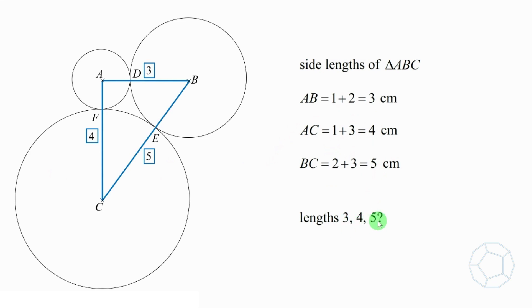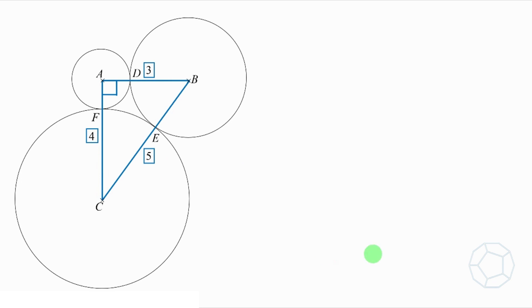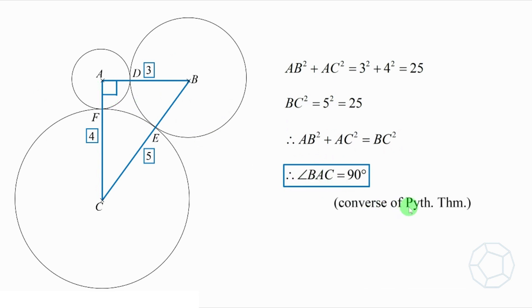Well, probably you might notice that it's the famous right-angled triangle. Let's prove it quickly. Because AB square plus AC square is equal to 25 and BC square is also equal to 25. Therefore, the sum of squares of the two shorter sides is equal to the square of the longest one. Therefore, angle BAC is equal to 90 degrees and the reason is Converse of Pythagoras theorem. This result is a turning point of the whole question. Remember this, and we shall use it again.